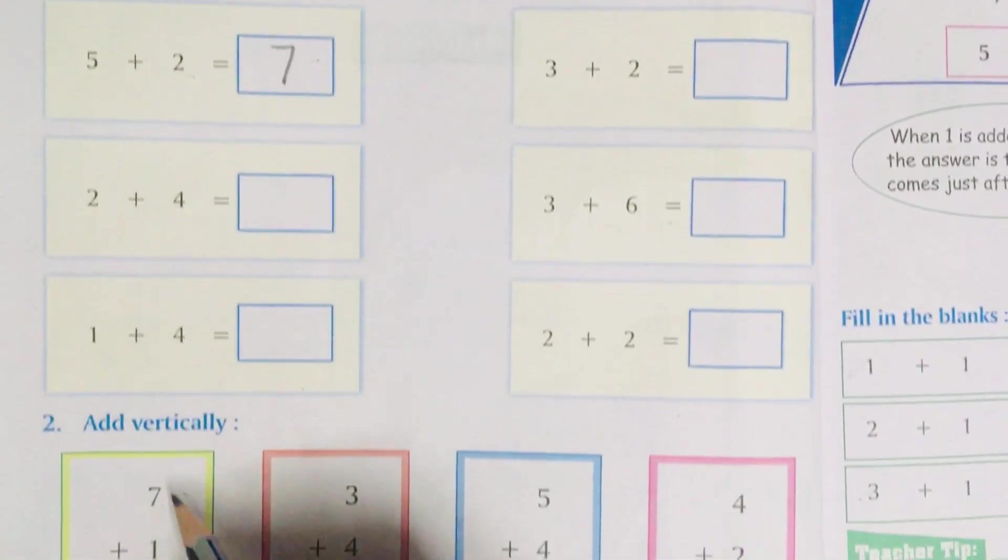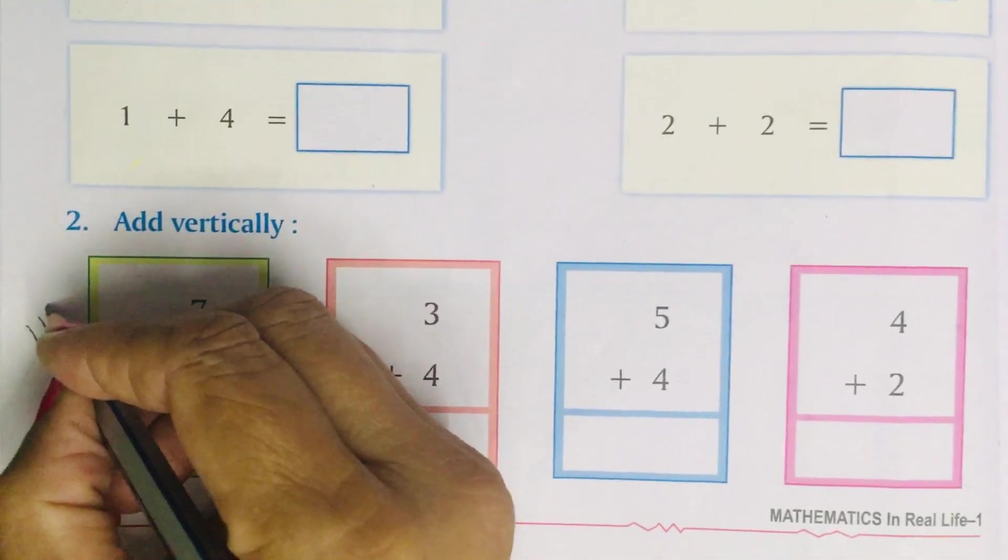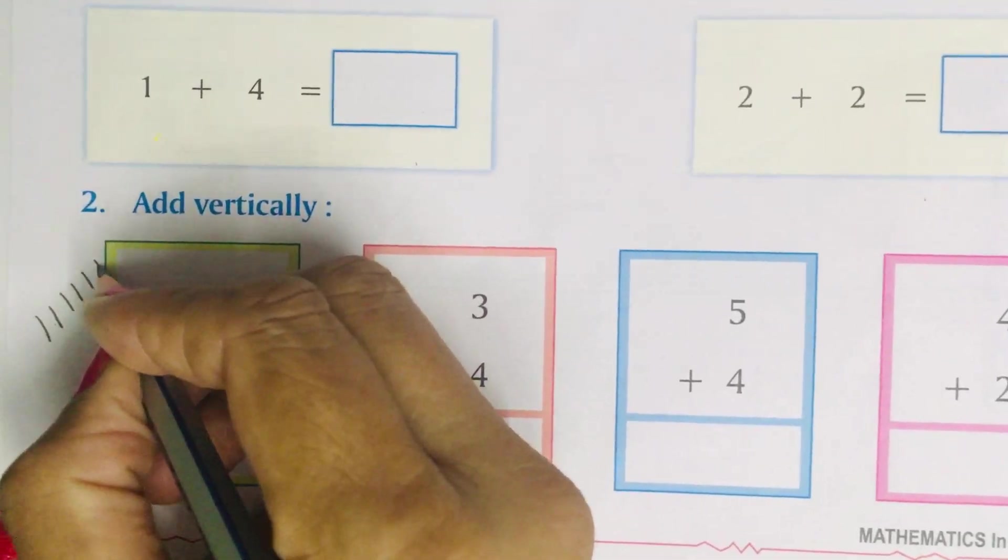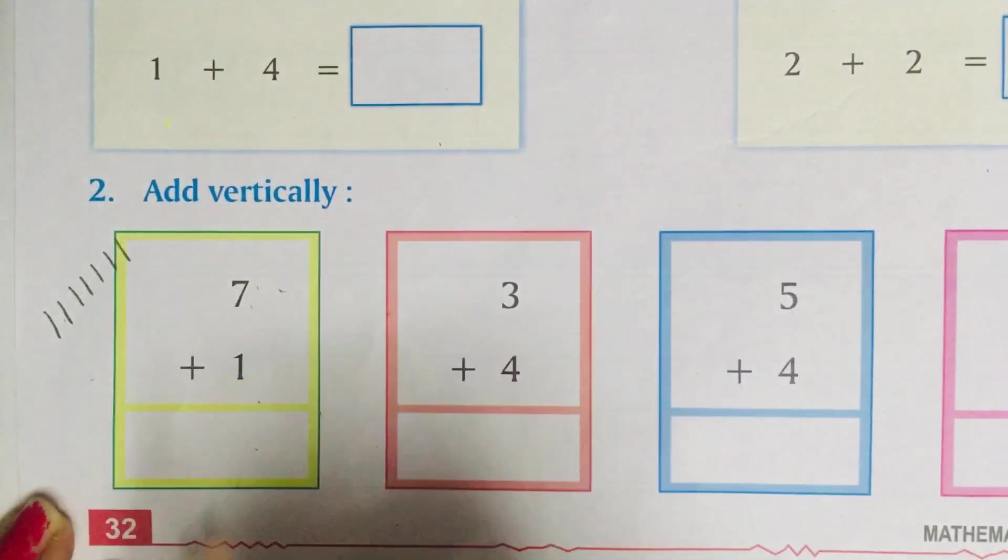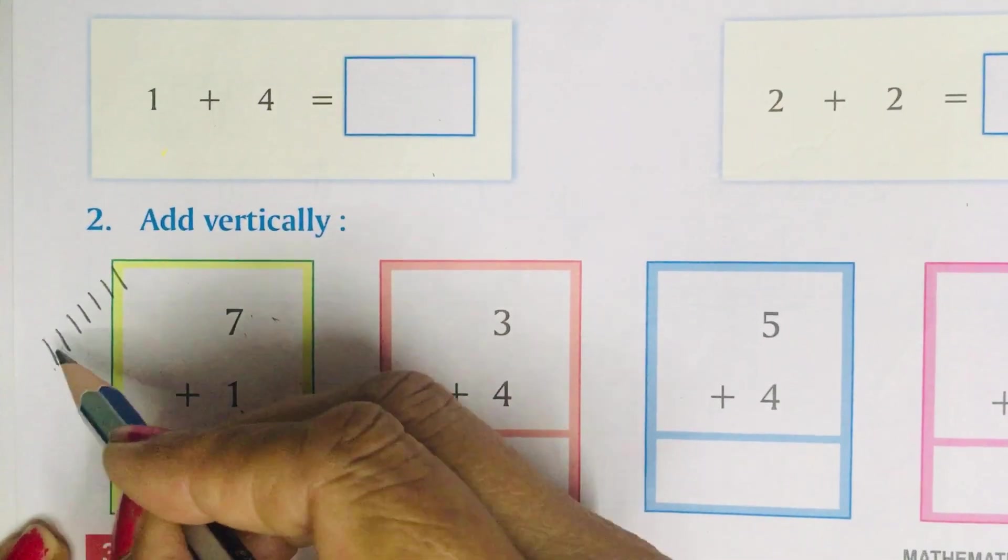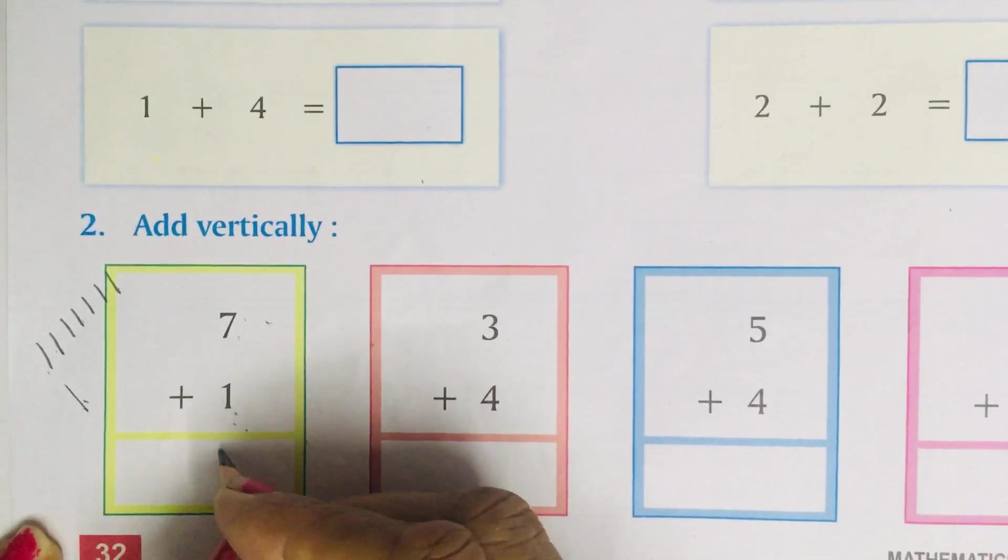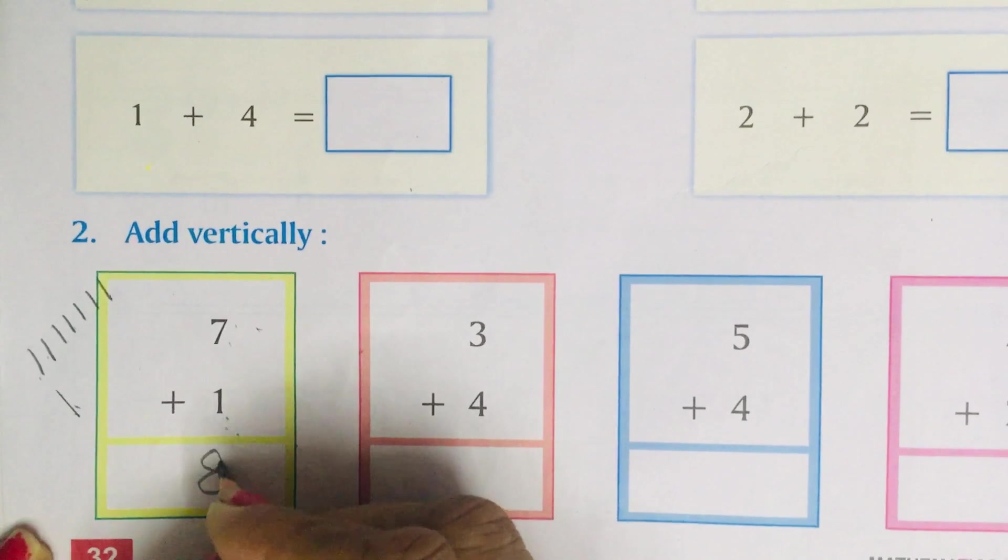Now, come down. 7 plus 1. So, draw lines: 1, 2, 3, 4, 5, 6, 7. Then, 1 is written. So, draw 1 line. Now, count them: 1, 2, 3, 4, 5, 6, 7, 8. So, you have to write 8 over here.